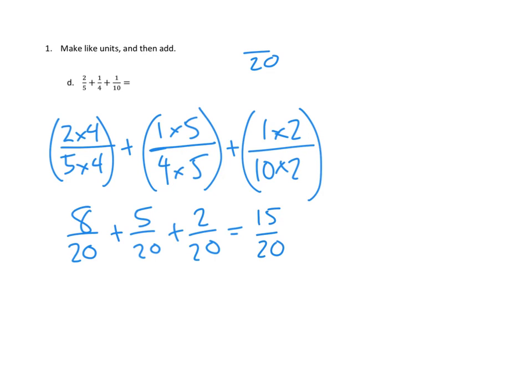And that's it, except that we noticed something. We noticed that fifteen-twentieths, we could simplify that. Is there some number that we could divide the numerator and denominator by to simplify this fraction? And I'm noticing right away that these are all multiples of five, so I think we can divide the numerator and the denominator by five. Fifteen divided by five is three. Twenty divided by five is four. Our answer is three-fourths.